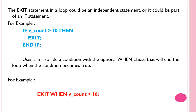The exit statement in the loop can be an independent statement or it can be part of an if statement. For example: if variable count is greater than 10, then exit. You can also add a condition with the optional WHEN clause that will end the loop when the condition becomes true — for example, EXIT WHEN count is greater than zero.